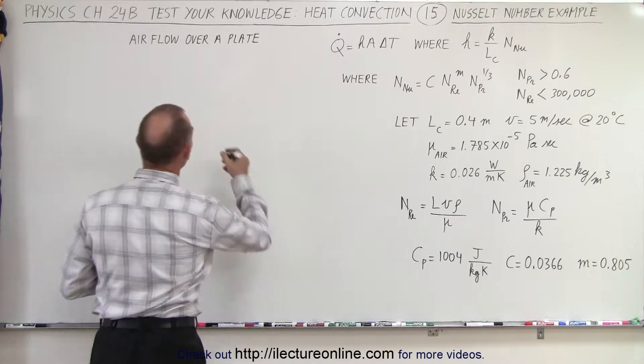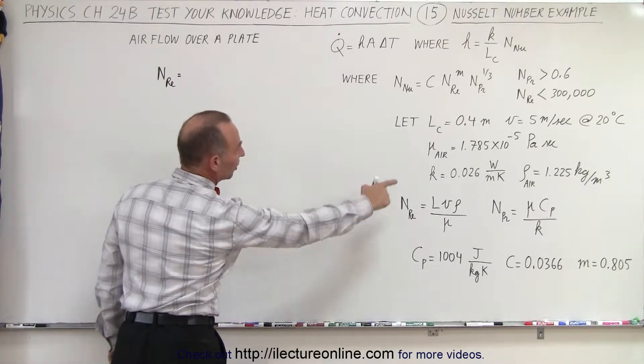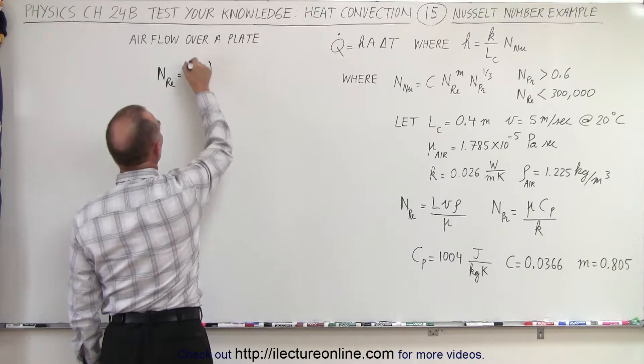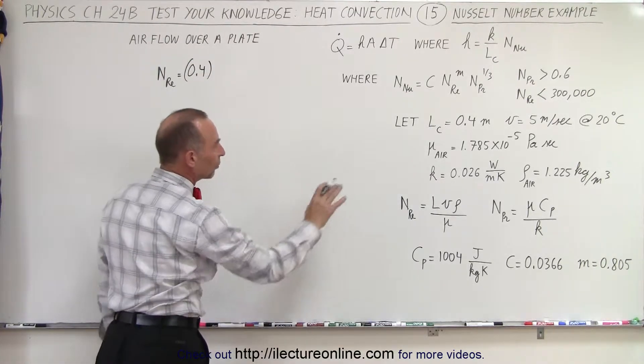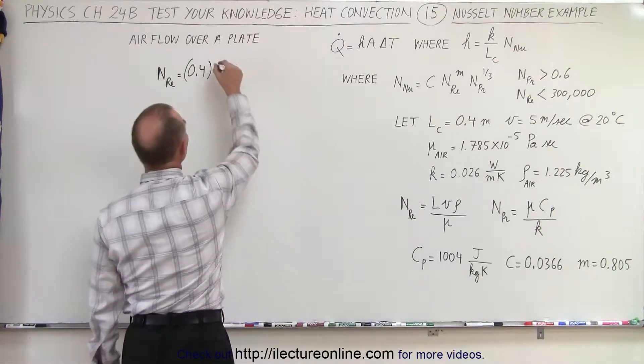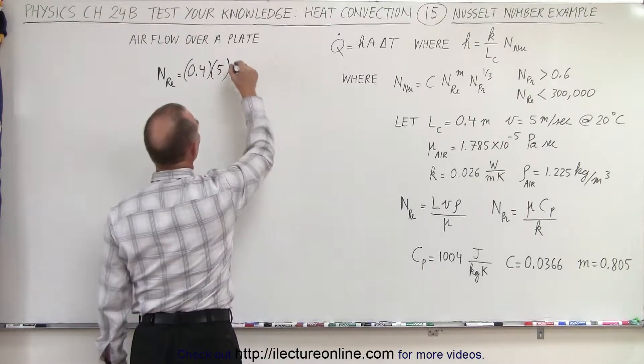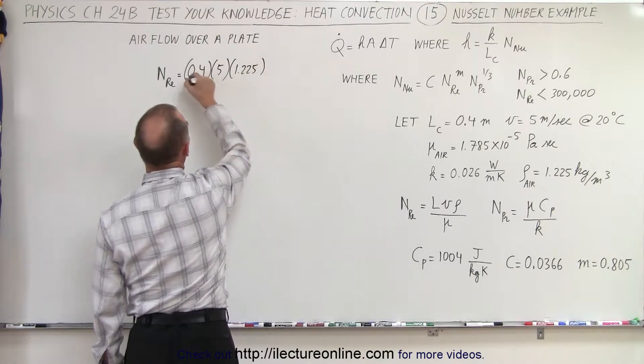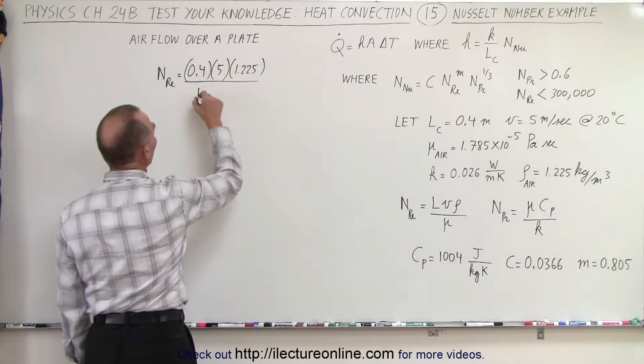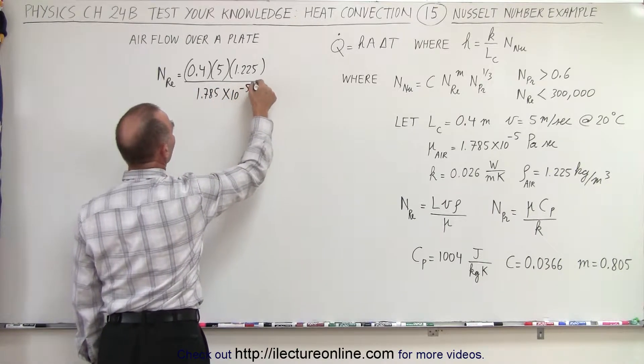Let's start with the Reynolds number, which is equal to the characteristic length, which is 0.4. And remember that all these numbers, all the units actually do cancel out, the velocity at 5 meters per second, the density at 1.225, and then we divide that by the viscosity of 1.785 times 10 to the minus 5.